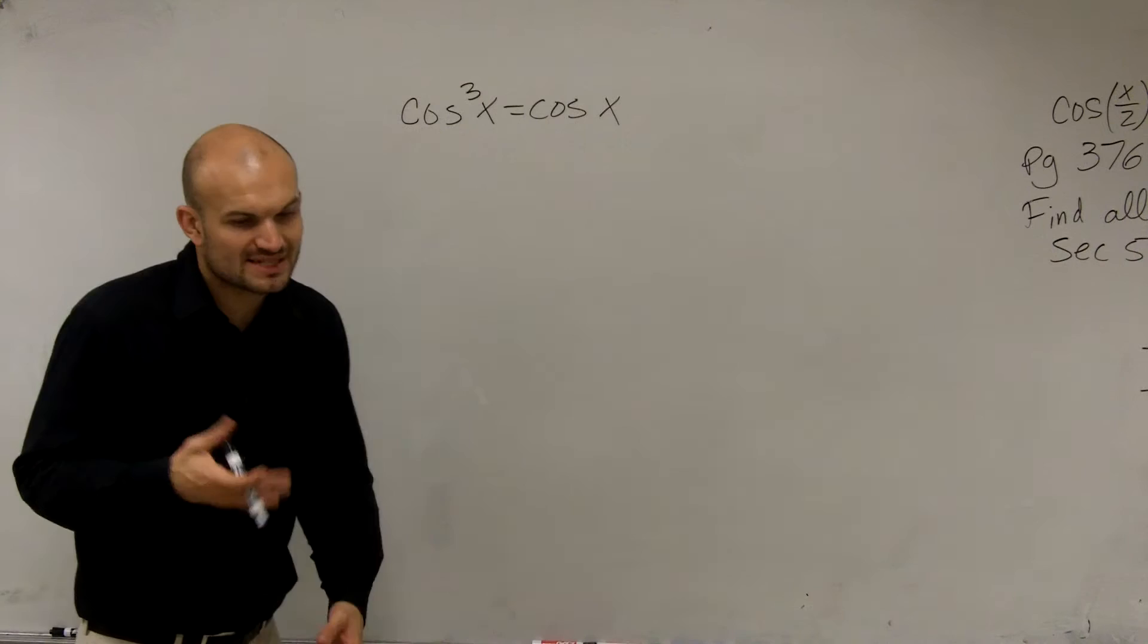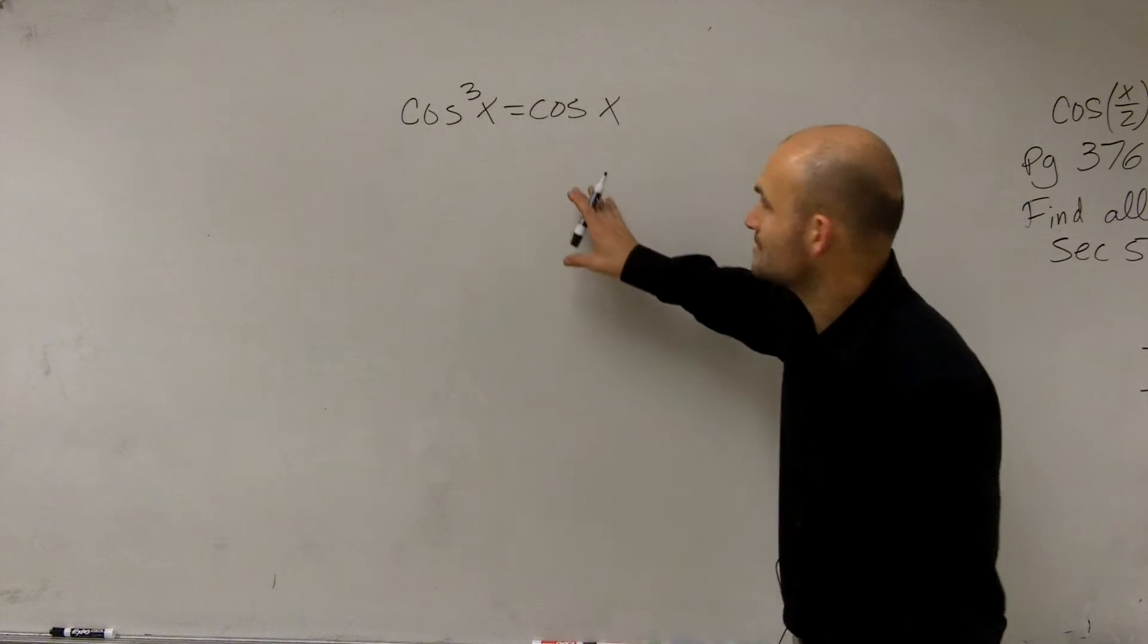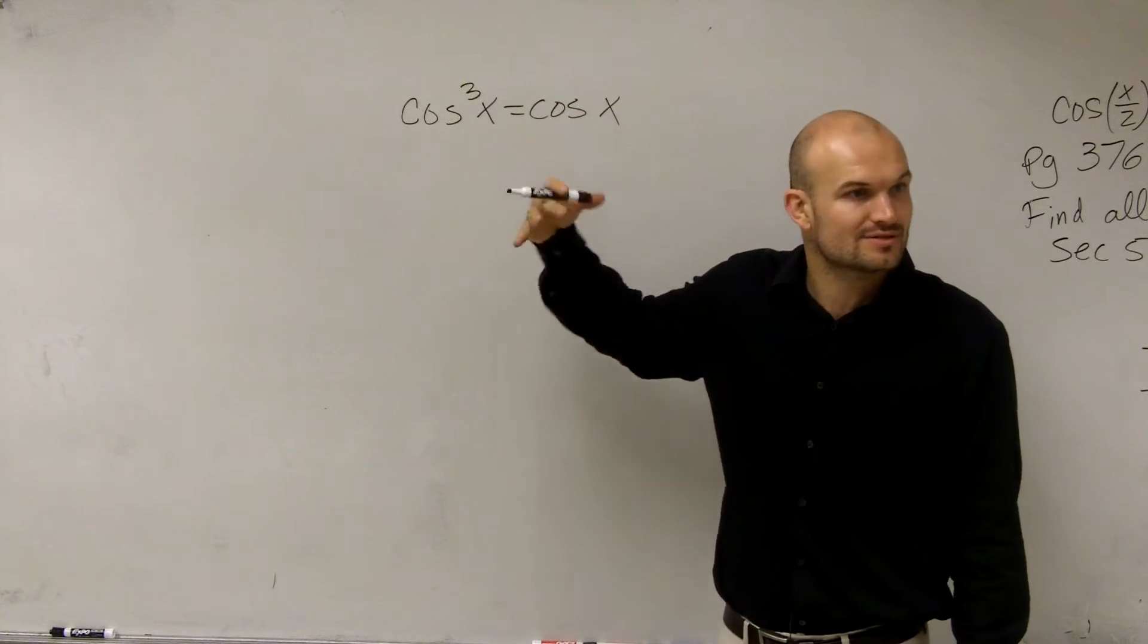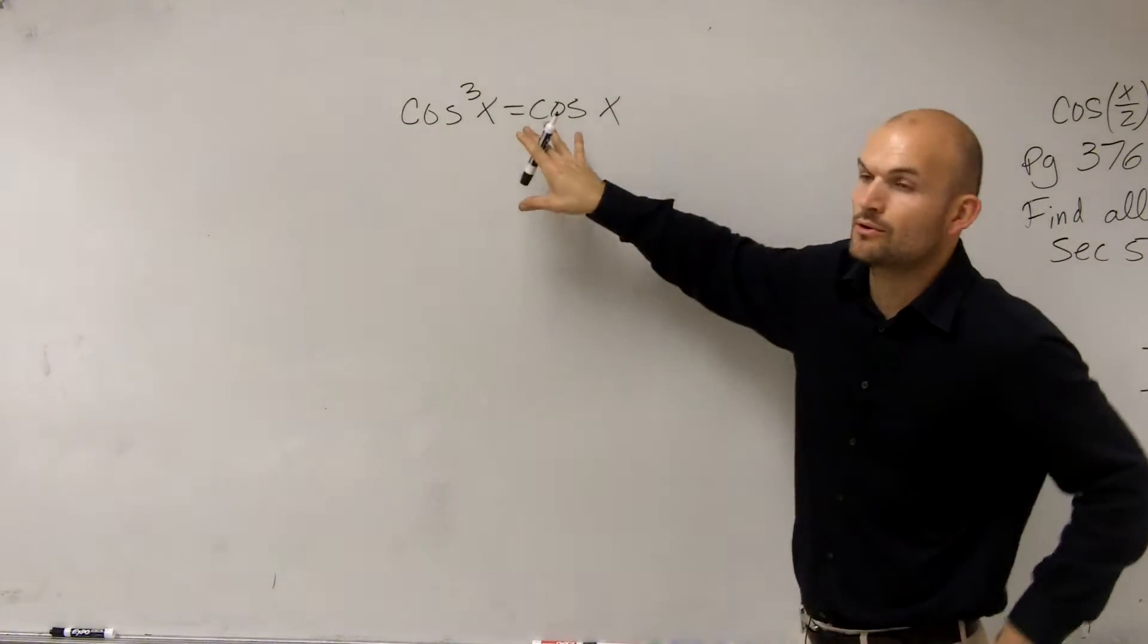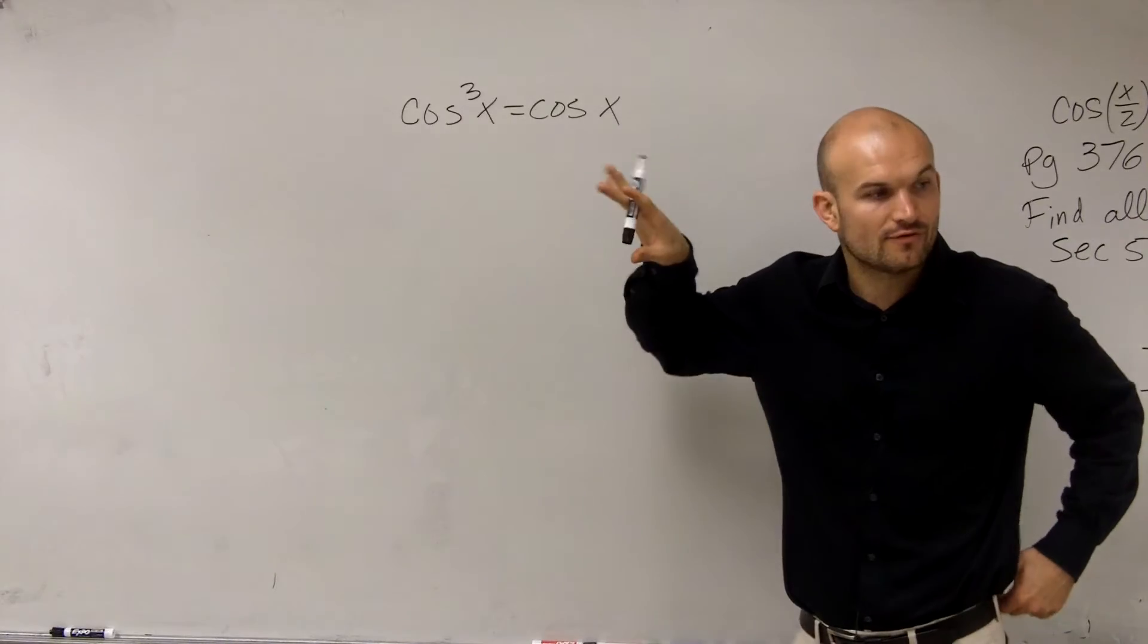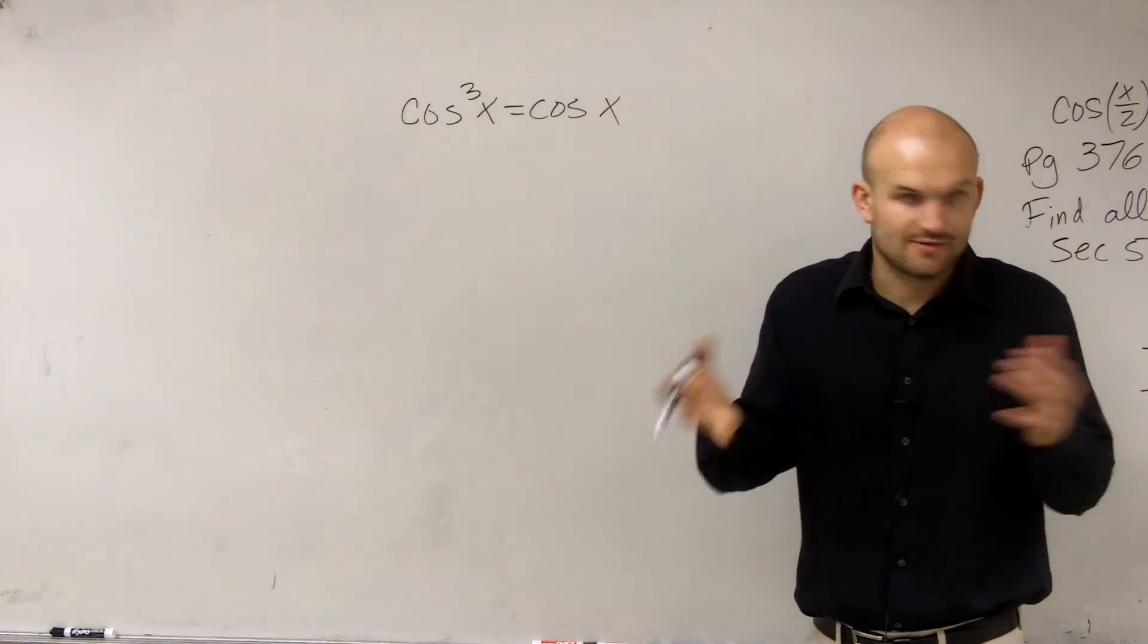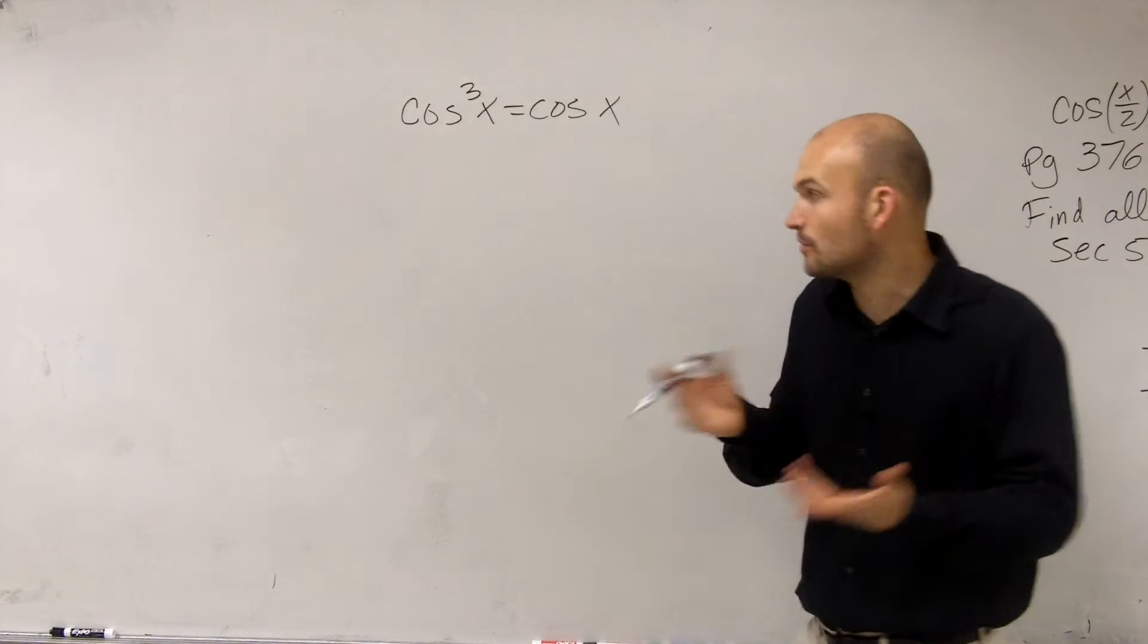The big mistake that a lot of students made is some wanted to divide by 1 or divide by cosine of x. The main important thing when we have an equation with our variables, we've got to get our variables all to the same side and see if we can combine them or isolate them.